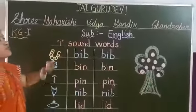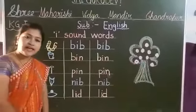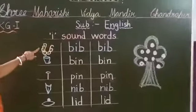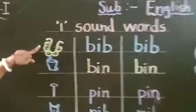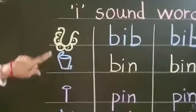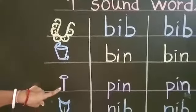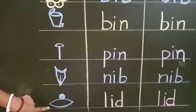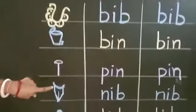I-sound words — the sound of I is E. See here, teacher has drawn some pictures on the board: bib, bin, pin, nip, and lid. How many pictures? 1, 2, 3, 4, 5.